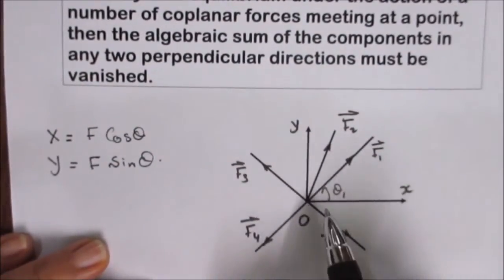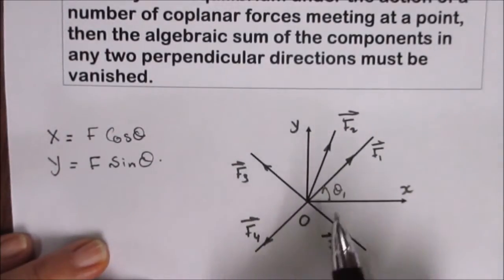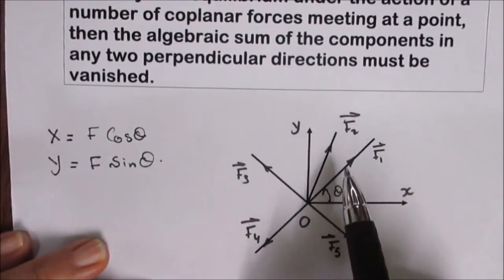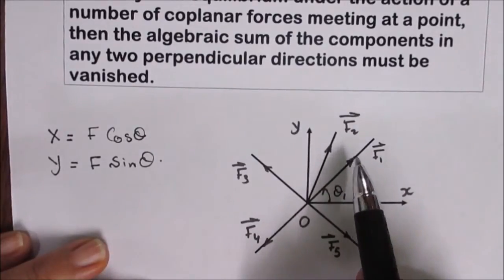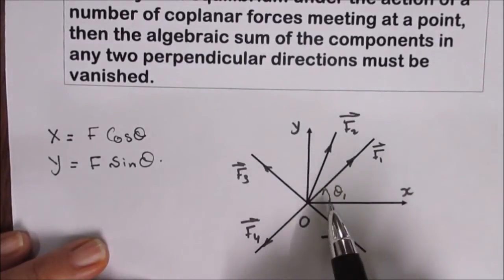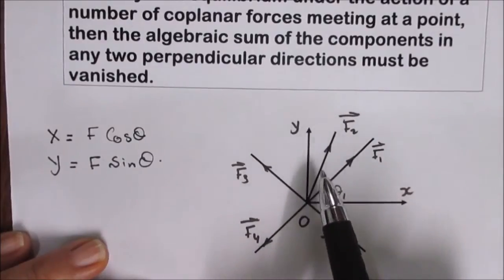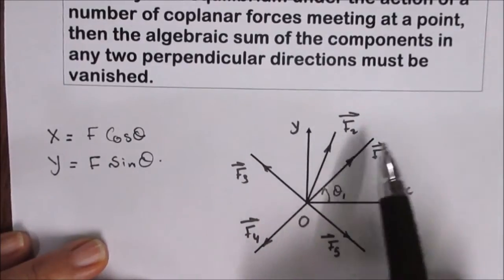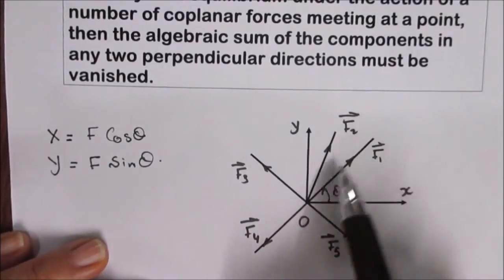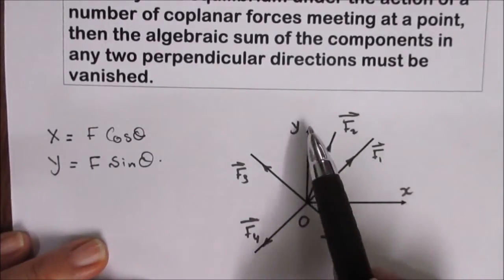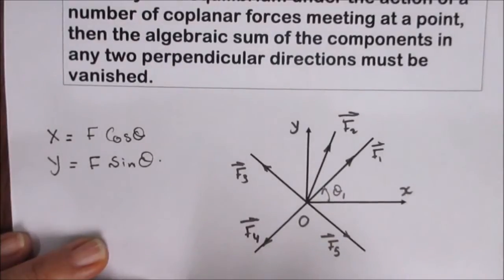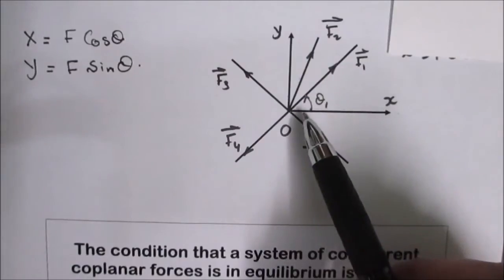The x and the y axis represent two perpendicular directions. Then the algebraic sum of the components of the forces in the direction of x equals 0, and the algebraic sum of the components of the forces in the direction of y equals 0.